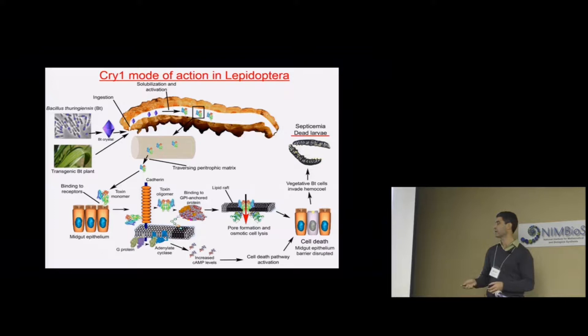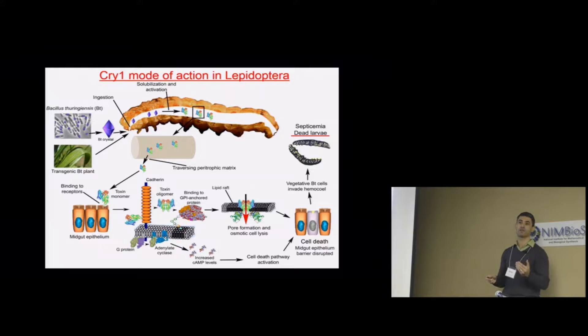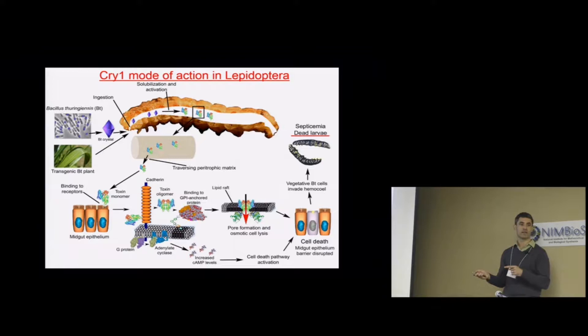The cells lose the ability to control osmolality — they swell and burst. Since the insect midgut epithelium is a monolayer, this essentially creates holes in the epithelium. That allows the bacteria inside the gut lumen to invade the body cavity, cause septicemia, and death of the larva. It's important to understand that it's not the pores that kill the insect — it's usually the septicemia.